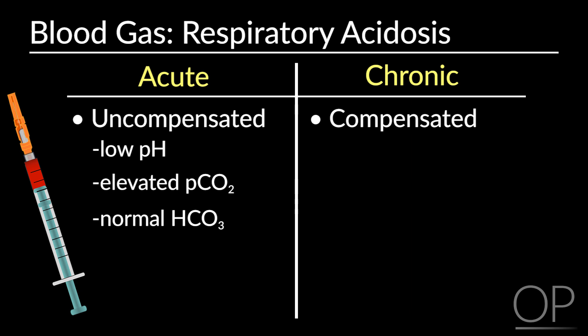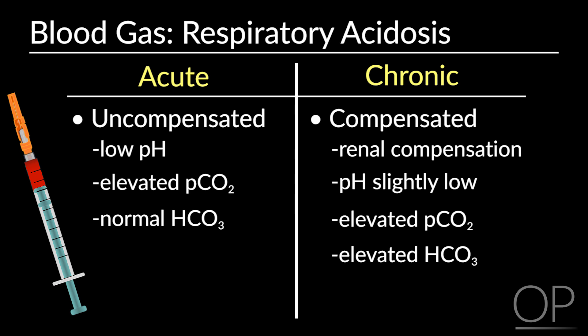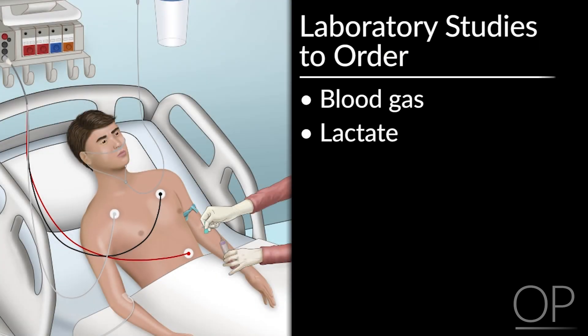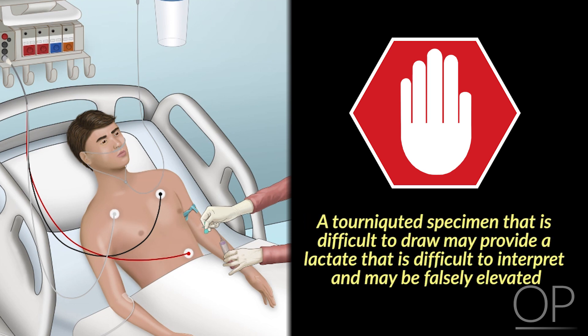In a chronic respiratory acidosis, the PCO2 will remain elevated and the bicarb will become elevated as the kidneys compensate. In addition to assessing the current blood gas, look back at prior blood gases and chemistry panels to assess if the patient is a chronic retainer of carbon dioxide. If the patient's CO2s have been elevated in the past and their bicarbonate has been elevated, this could suggest more chronic CO2 retention. Consider sending a lactate with your blood gas to evaluate for end-organ hypoperfusion, as would be seen in sepsis. Note that lactate should be sent from a free-flowing specimen or central line, as a tourniqueted specimen that is difficult to draw may provide a falsely elevated lactate.